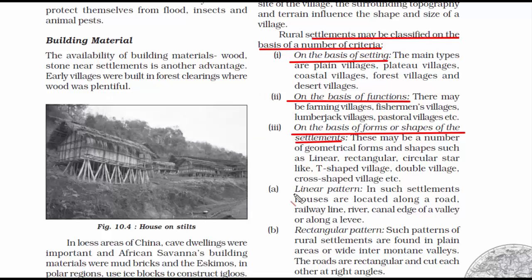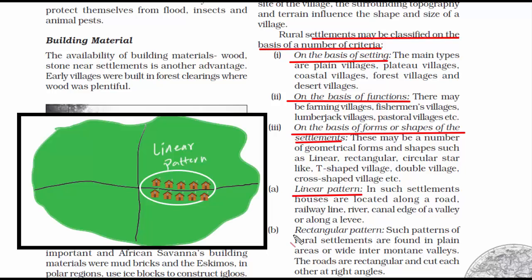Under forms and shapes, we have certain geometrical patterns. The first is the linear pattern — meaning a straight line. Here, houses are located along a straight road, railway line, river, or canal. From the top, it looks like a long straight line of houses. This is called a linear pattern.